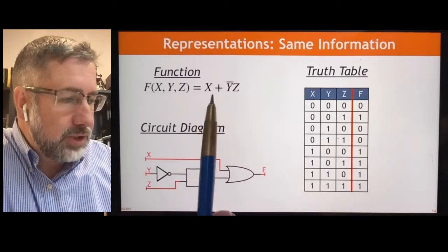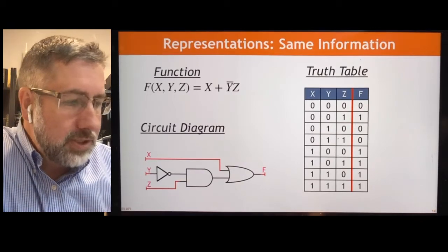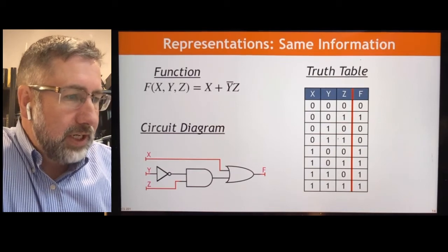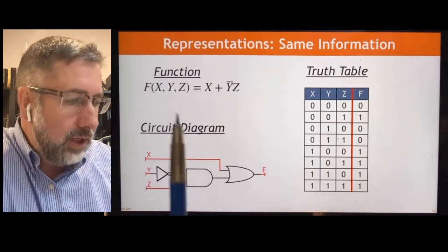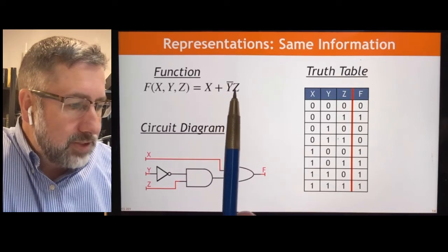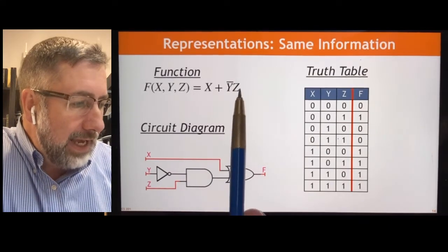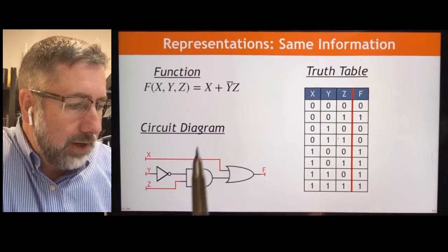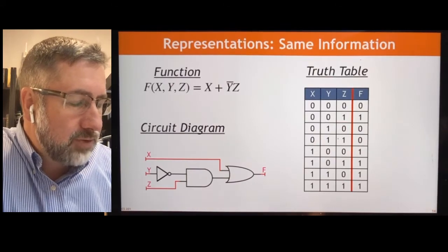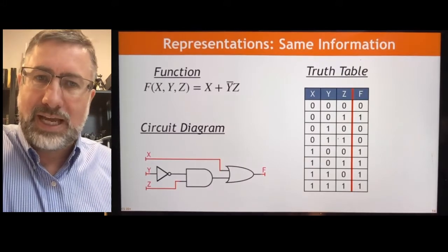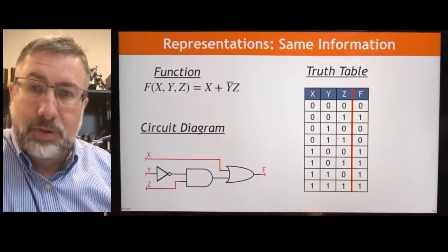So we can look at the way that these functions are written and we can indicate the information that's contained in that function in a few different ways. We can indicate that information as a written algebraic function like this. We can also draw it as a circuit. This is identical information. And you can see that, right? Because the x or y bar z in this function, we do the y bar first, because not happens first. And then we do the and because that's our convention. So y bar and z, that's this y bar and z. And then the result is or'd with x and we get the function f. So whatever the result is going to be, the circuit tells us the same information as the function.